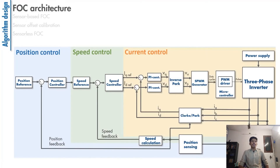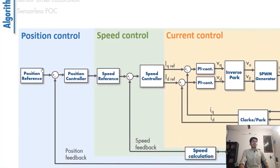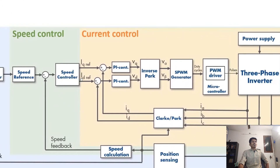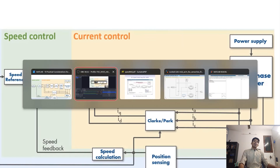Hello and welcome. In this video we will take a look at the speed controller subsystem. This subsystem is responsible for taking the reference speed and generating the id and iq reference currents. Position control is not relevant for us — it is used only in servo applications where precise positioning is important. So we only have two loops in our system: speed control and current control.